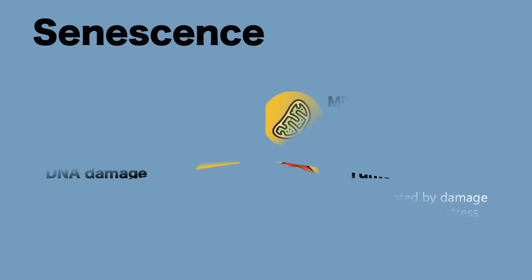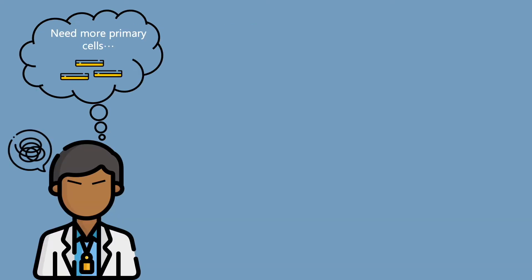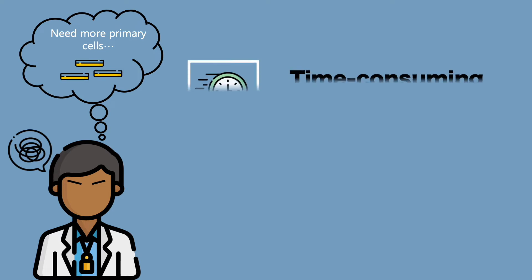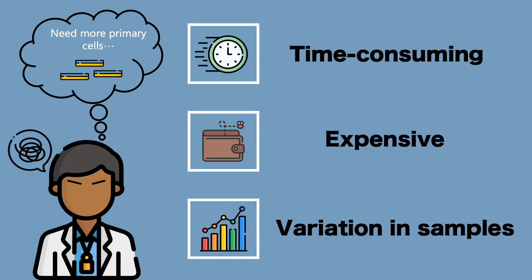Senescence is set off by damages or injuries associated with the aging process, such as telomere shortening, DNA damage, mitochondrial dysfunction, tumor suppressors, and cell cycle inhibitors. Because they are not long-lasting, scientists would need to take new samples each time the cells stop proliferating. The process is time-consuming and quite expensive to culture new primary cell samples. Not to mention that some samples might vary from another, which can lead to inconsistent data.